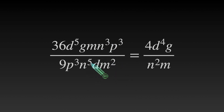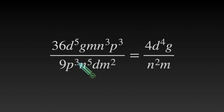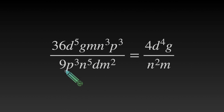n cubed and n to the 5th: 5 minus 3 is 2, so n squared — we had more n's at the bottom, which is why you see that there. And then finally p cubed and p cubed — these cancel out. Essentially 3 minus 3 gives us p to the 0. Anything to the 0 power is 1, so multiplying by 1 doesn't change anything — that's why we can just say the p cubes cancel out.